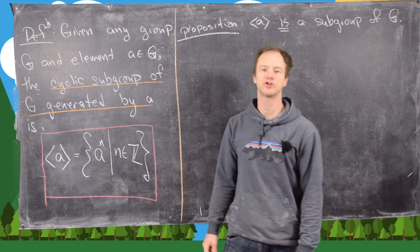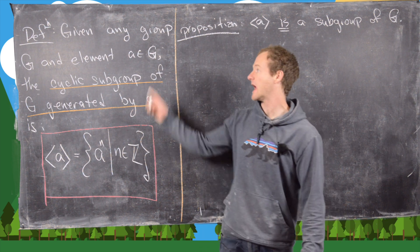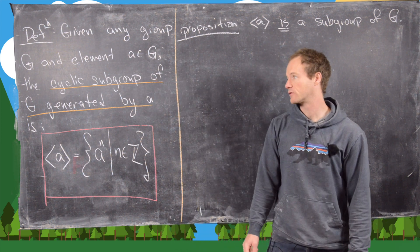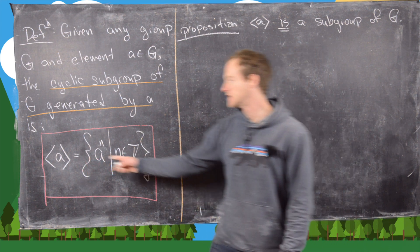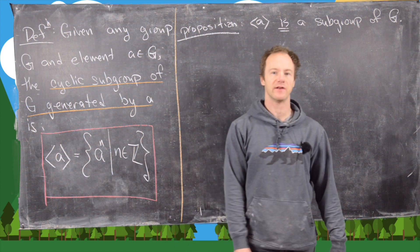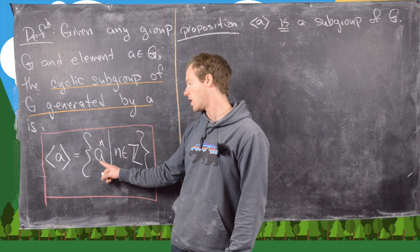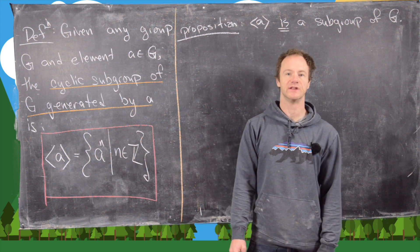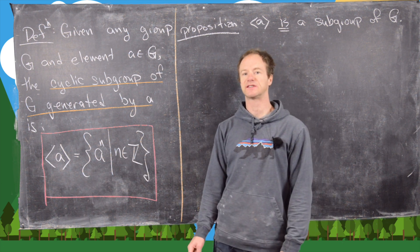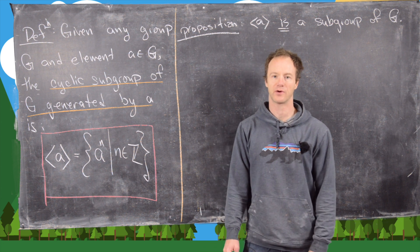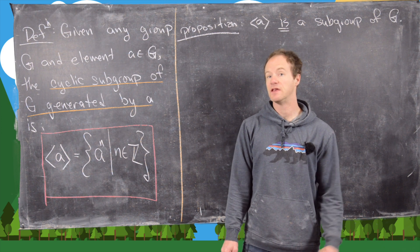In this video we want to look at the notion of a cyclic subgroup of a group. Given any arbitrary group and any element of that group, we can define the cyclic subgroup of g generated by a using angle bracket notation. That is equal to all powers of a as n runs through the integers, where a squared means a combined with itself twice using the group operation, be that composition of functions, multiplication, or addition.